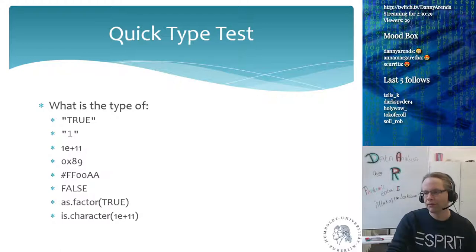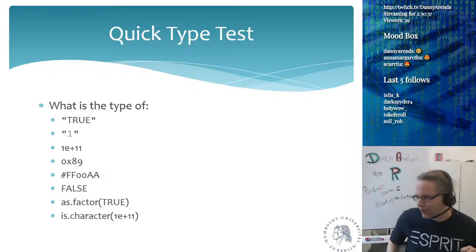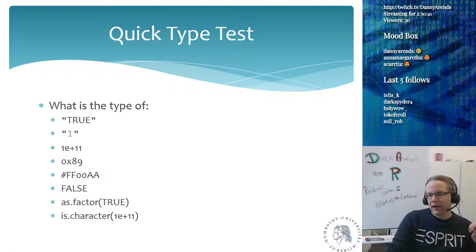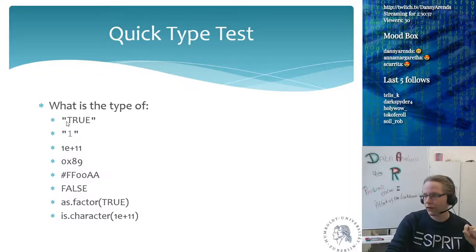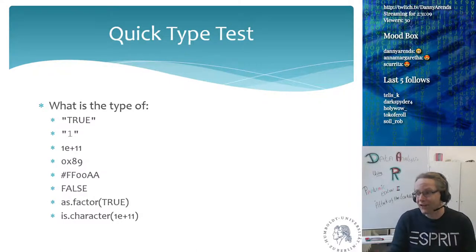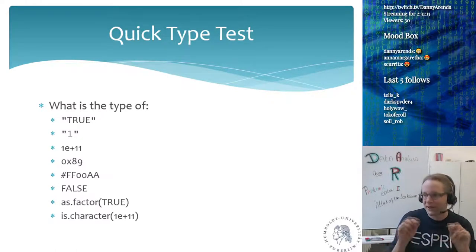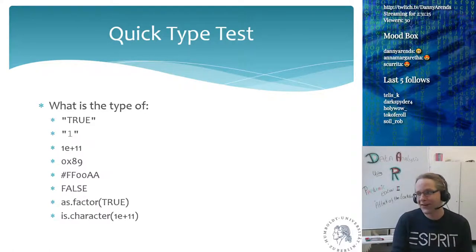Some guesses say logical, some say character. This is a character. You can tell because it has quotes around it. Although it has the word 'true' written in it, it is not a logical. This is exactly how the type system in R can trick you — it's the details that count. If you do an experiment and take the chemical with the quotes around it, you're not taking the chemical you actually want.